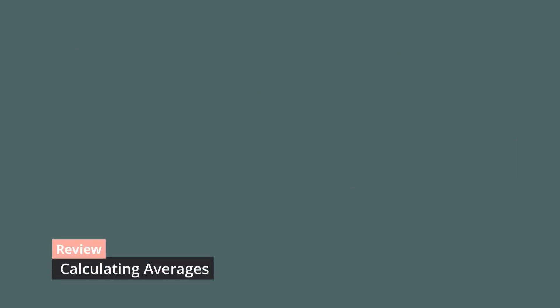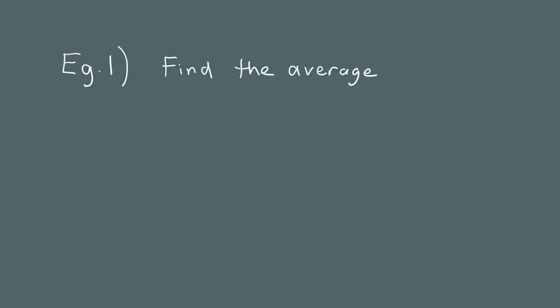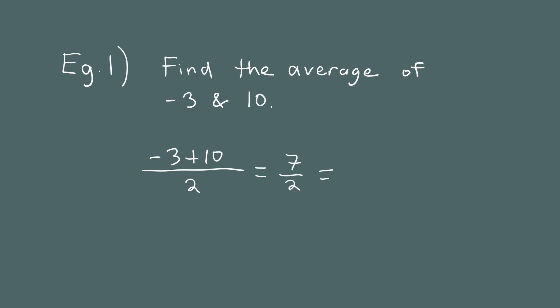Let's see a few examples and then we'll come back and discuss midpoints. Example one: what is the mean, or what is the average, of negative three and ten? All we need to do is add these numbers together and then divide by the number of numbers. So we have negative three plus ten, and since there's two numbers, we divide by two. That gives us 7 halves, or if you want to write it as a decimal, 3.5. This is how you find the average of two numbers: add them together, divide by two.